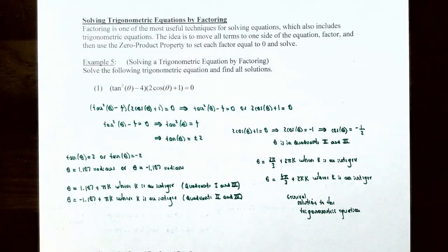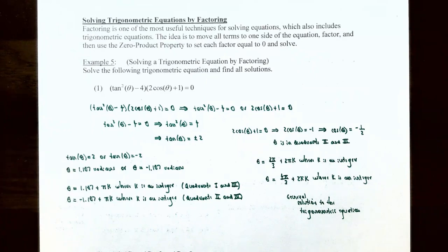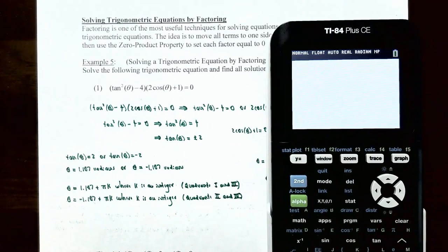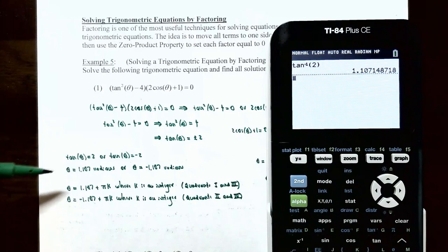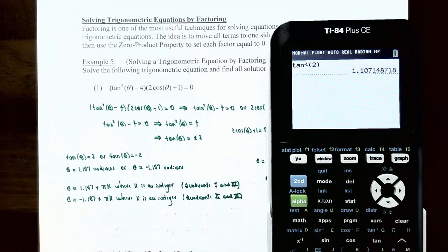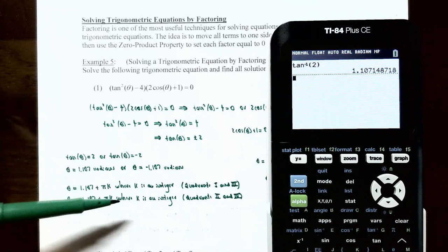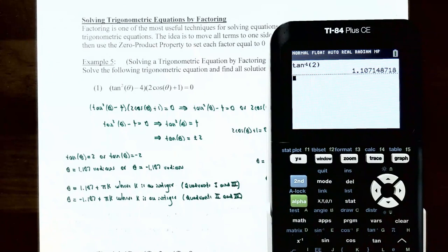If tanθ = 2, use the inverse tangent function to isolate θ. Taking inverse tangent on both sides: inverse tangent of tanθ is just θ. So θ = arctan(2) ≈ 1.107 radians. Make sure your calculator is in radian mode. The general solution is θ = 1.107 + πk, because the period of the tangent function is π radians. This gives angles in quadrants 1 or 3, since tangent is positive there.